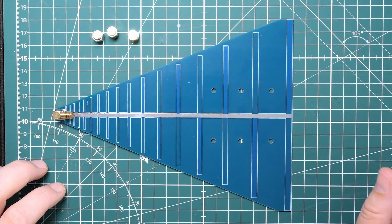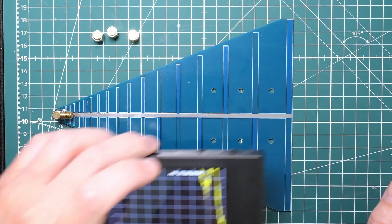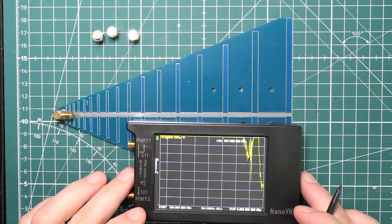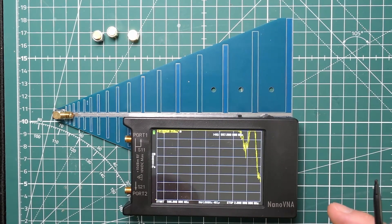And the first thing I'm going to do is stick it on my nano VNA, which is here, and look at its standing wave ratio. See if it is what it claims it is.